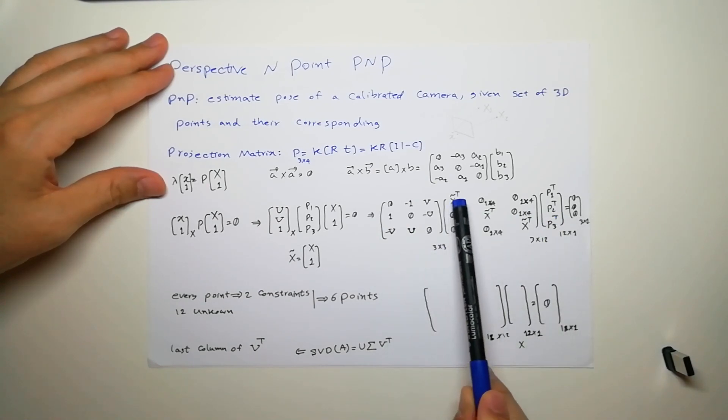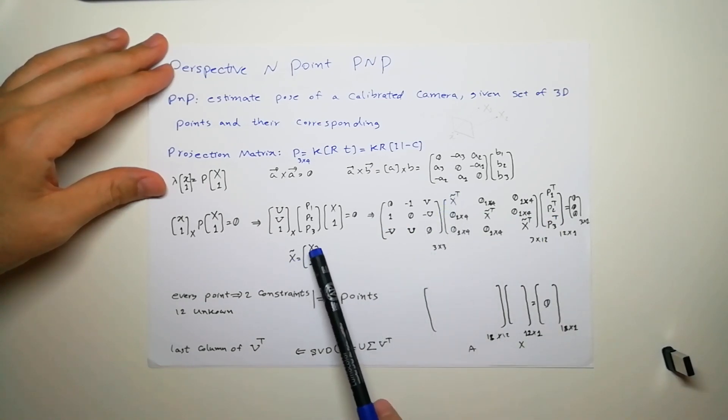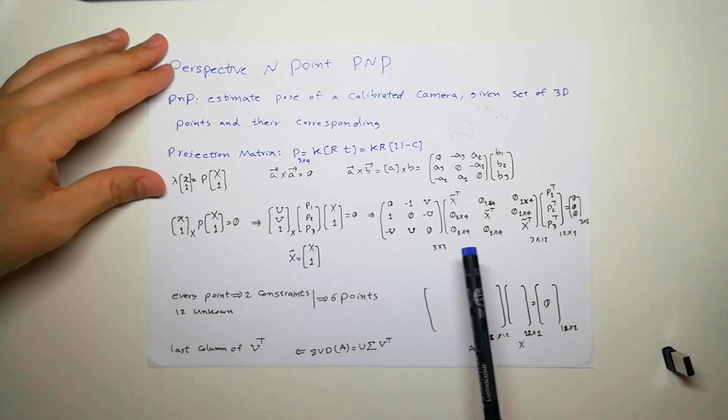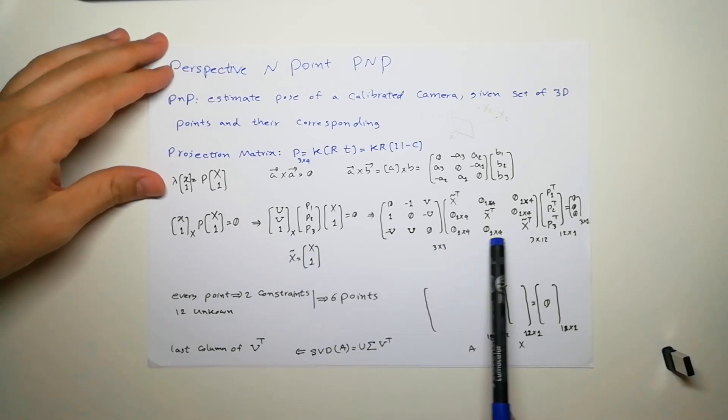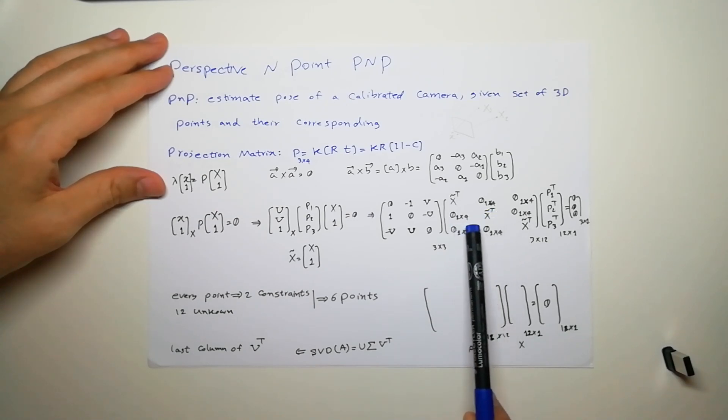You can see x hat is x in a matrix form. Sorry for my bad handwriting, but you can see there are lots of zeros here, 1 by 4, 1 by 4.